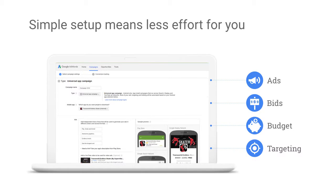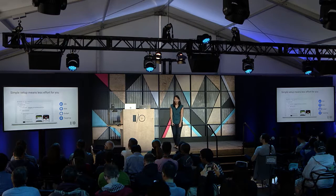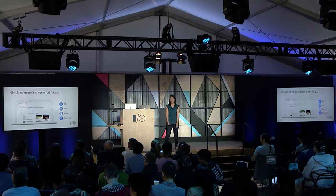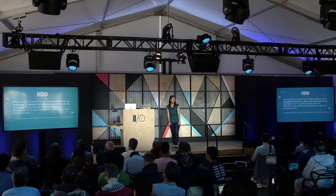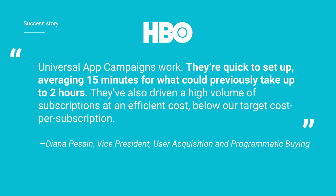Developers love UAC for its simplicity in setup, efficiency in hitting performance goals, and ability to reach Google inventory at scale. UAC campaigns are extremely simple and really powerful. Developers just need to provide a little creative text, some geographic location info, and how much they want to pay per install — and we do all the hard work. HBO used Universal App Campaigns to put the HBO Now app in more people's hands, reducing setup time from two hours to 15 minutes, while beating their target cost per subscription.